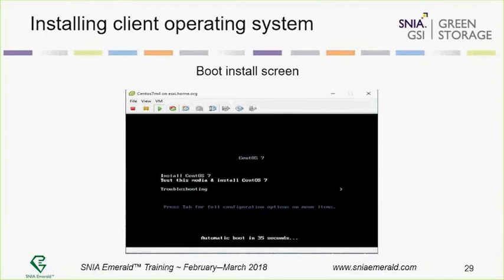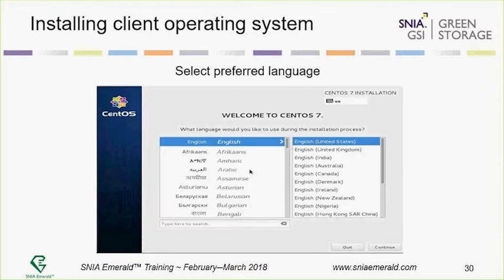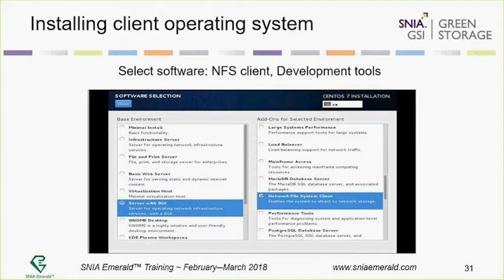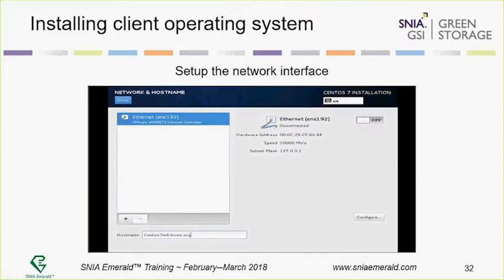Here we're going to go through installing a CentOS 7 load generator. I picked a CentOS 7 installation disk, booted it up, selected English, then made sure to enable a server with a GUI because I don't want a command line interface when talking to these things. I also turned on the network file system, NFS, because that's what I'm planning to run my workload on. If you were installing Windows, you'd be running on top of CIFS. If you don't turn these packages on during install, you won't have that capability.